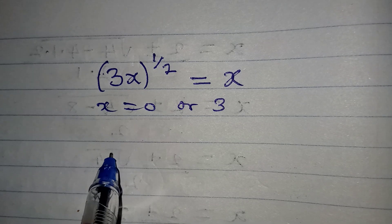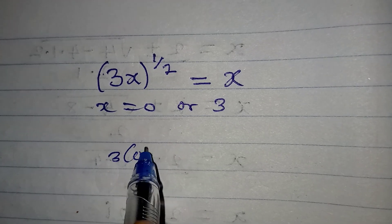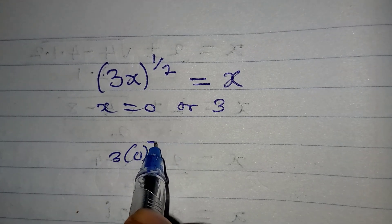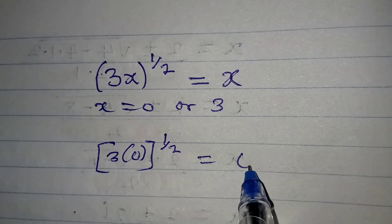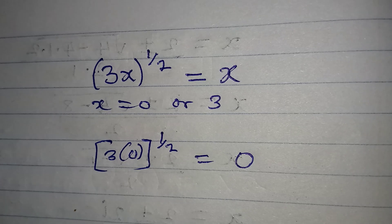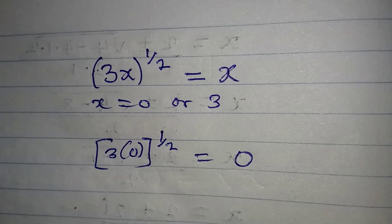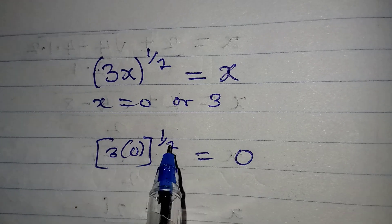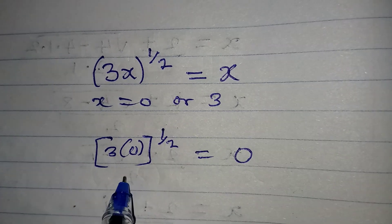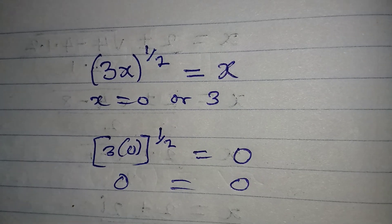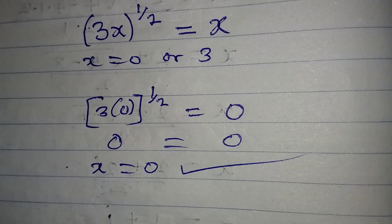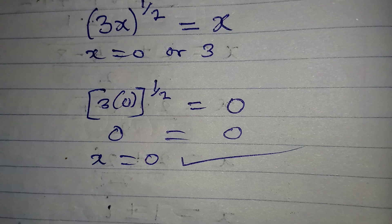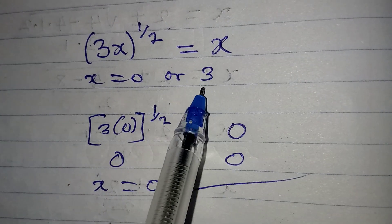So if you put in 0, that means we have 3 times 0 to the power of 1/2. Will that be equal to 0 for x? Yes, because 3 times 0 is 0, 0 to the power of 1/2 is still 0. So we have 0 here which is equal to 0 here, meaning that x = 0 satisfies the equation.